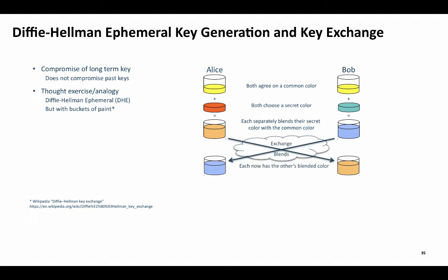Then they exchange blends over the untrusted network. Note that an observer can see the light orange and light blue blends, but there is no efficient algorithm for the observer to deduce the exact secret color that each added to the common bucket of yellow paint. That is, for example, there is no way to determine the exact number of molecules of red paint that Alice added to the yellow paint by looking at the orange paint. The final step is for each to mix their secret color to the other's blended color, with the result that they both end up with the exact same common color.